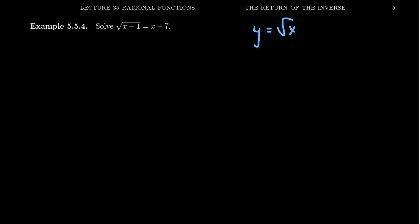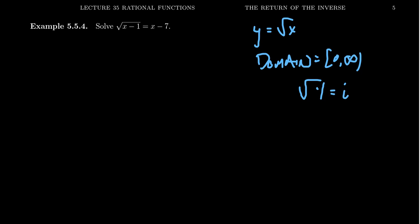If you take y equals the square root of x, its domain is only going to be zero to infinity as a real-valued function. We've dealt with this issue before when working with quadratic functions: if you take the square root of a negative, you end up with an imaginary number. If you're willing to consider complex solutions, that relaxes the domain problem. Whether we include complex solutions or not depends on whether we want to relax this condition.